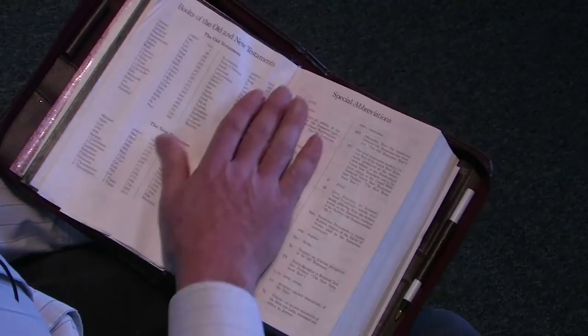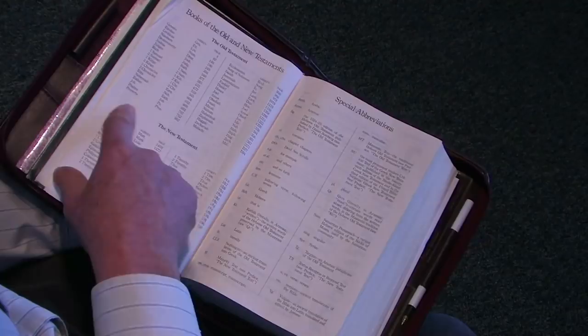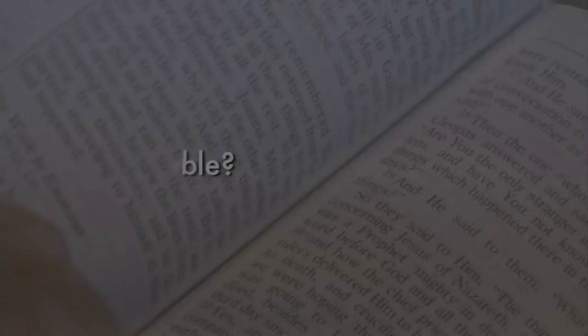That's a very good question. You want to look at the front of your Bible — you will find the list of books there. Here's the Old Testament and the New Testament. The books are listed on the far left-hand side, and the page number is listed just to the right of that.